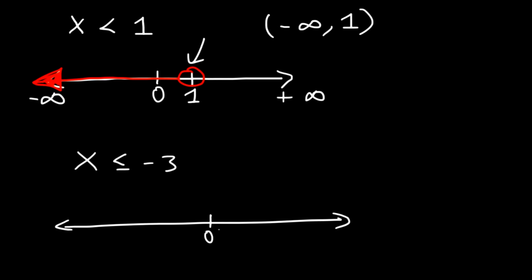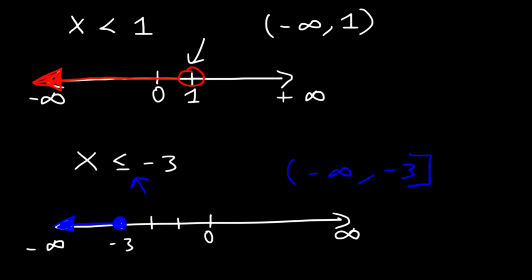Now let's try the other one. So here's 0, negative 1, negative 2, negative 3. So x is less than or equal to negative 3. Anytime you see the underline, use a closed circle. And because it's less than, we need to shade towards the left. So the answer is going to be from negative infinity to negative 3, but since it includes negative 3, use a bracket since we have a closed circle.